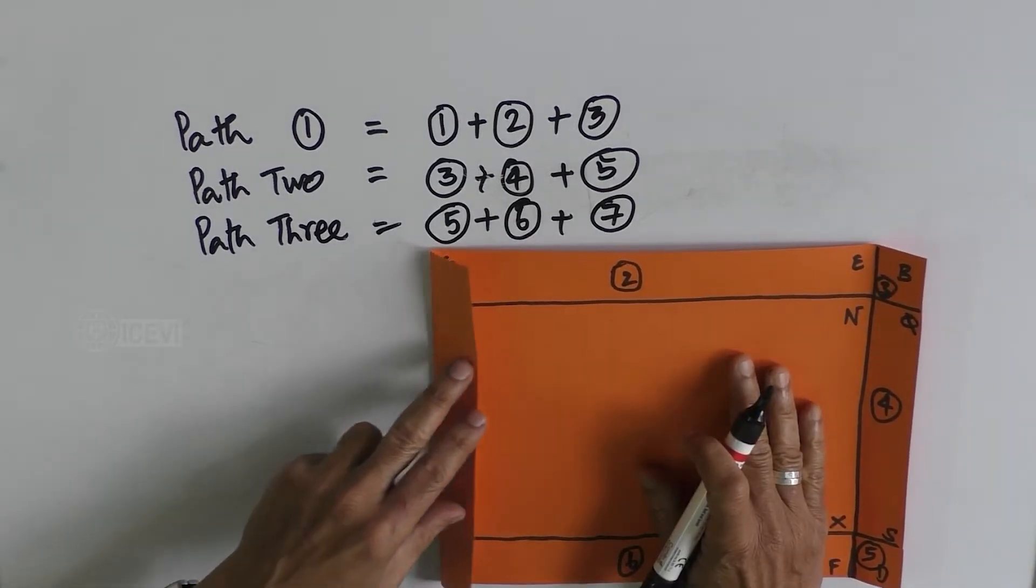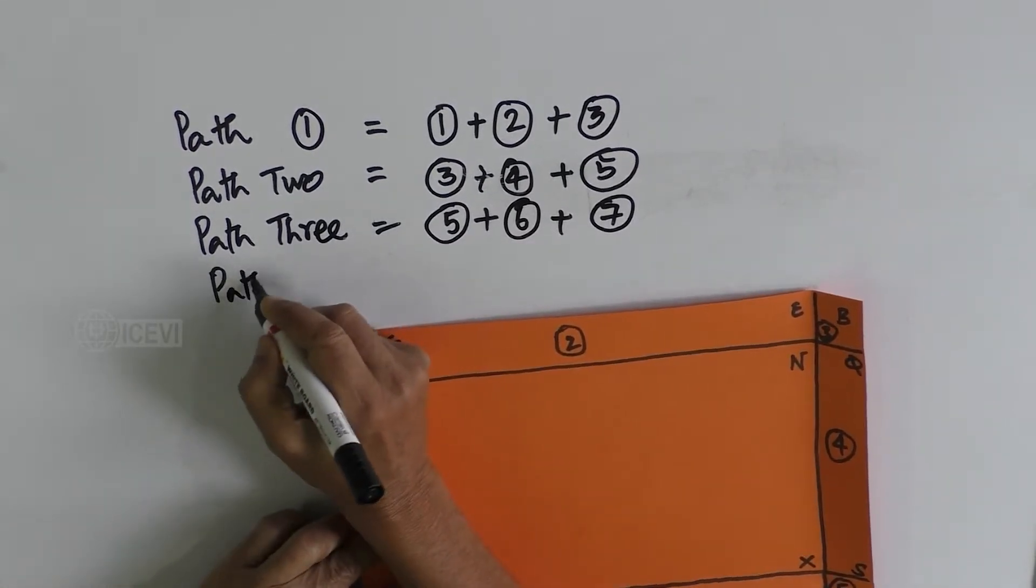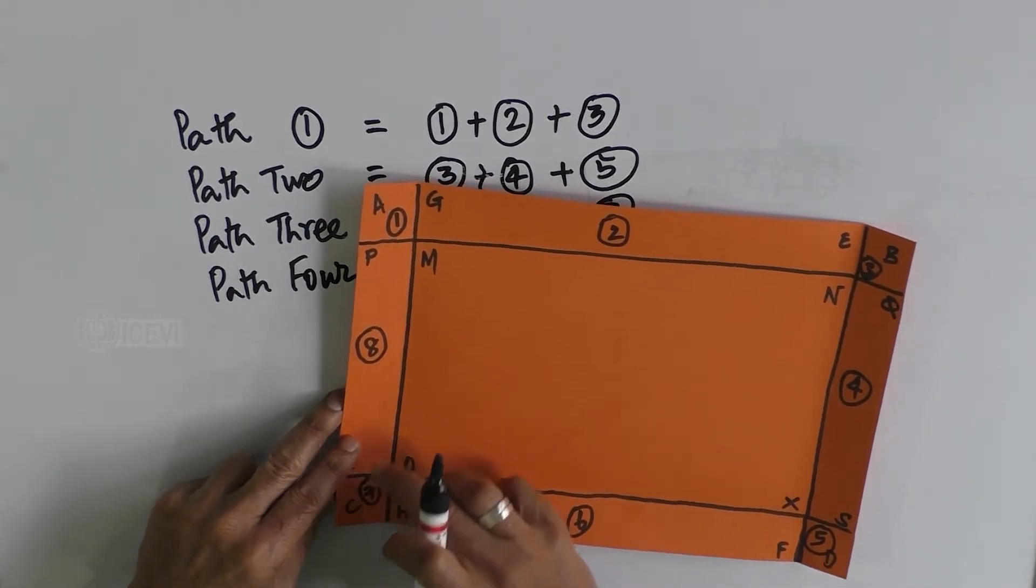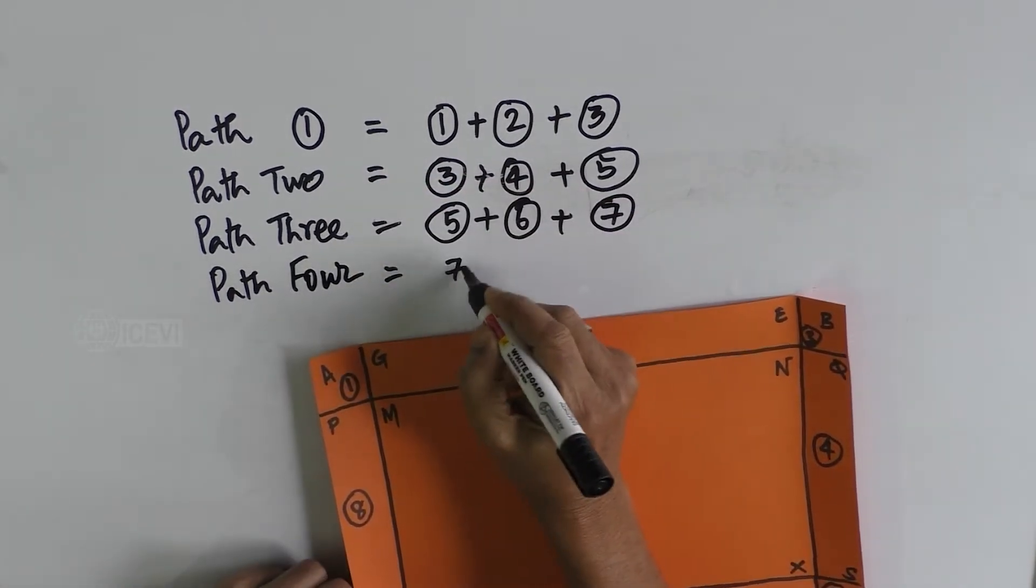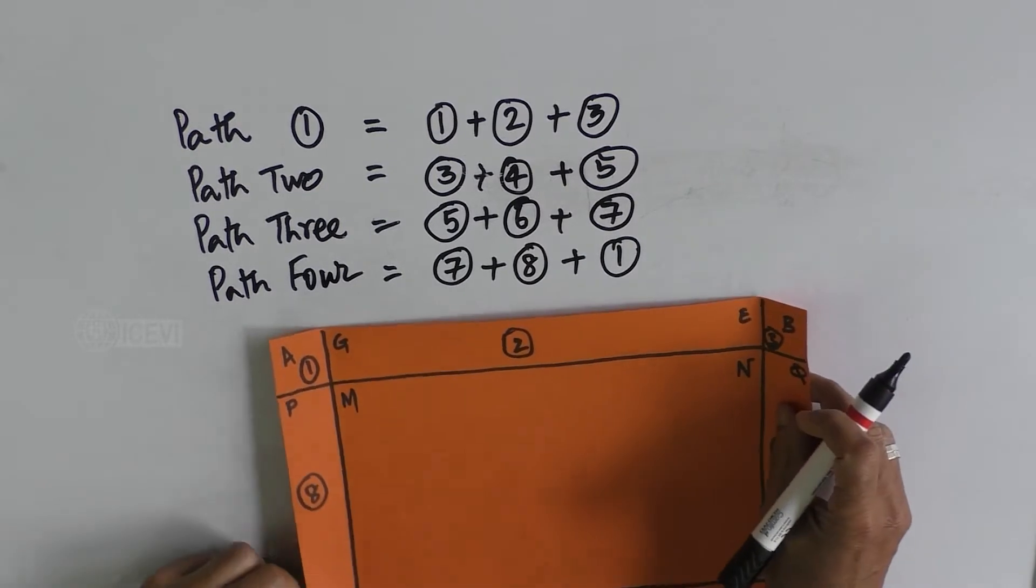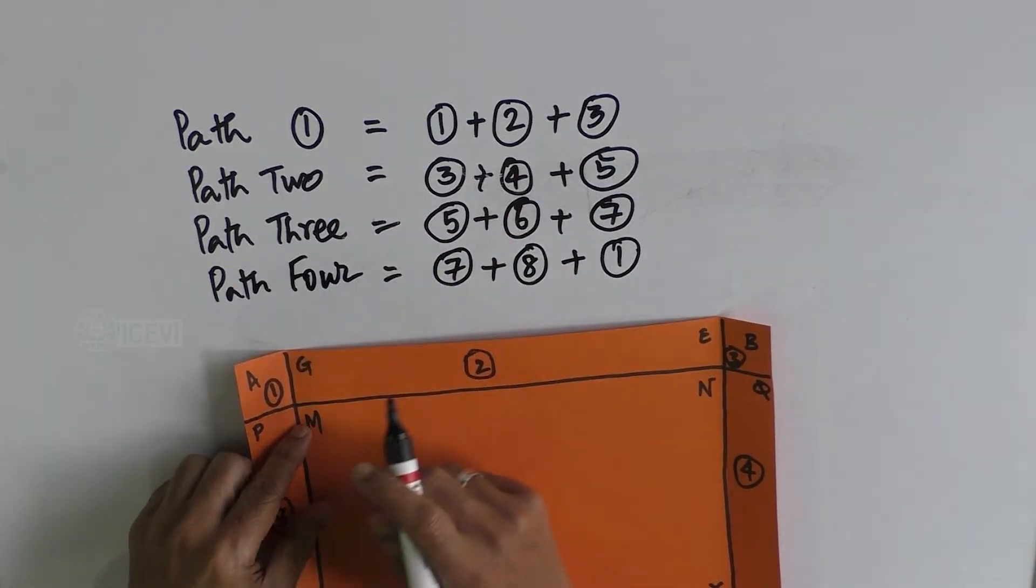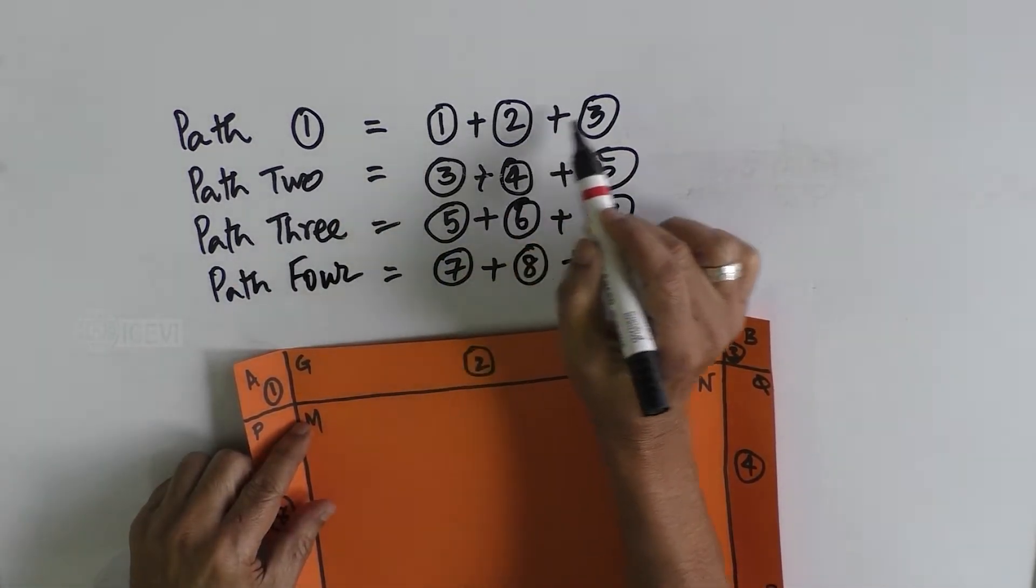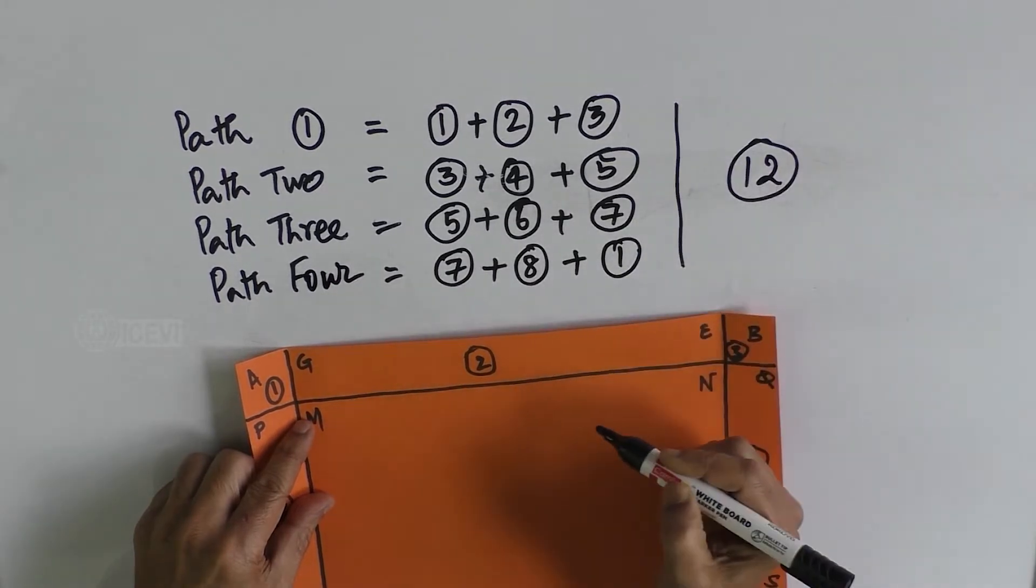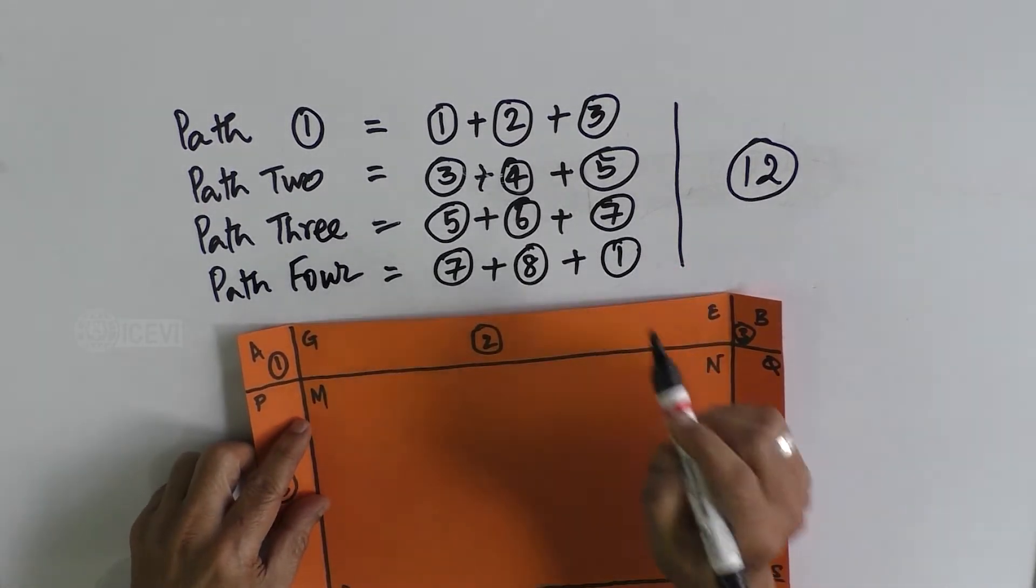Now when you take the path on the left side independently, that is path four, we get the areas of box seven plus eight plus one. So now how many are there when you take the path separately? There are three in each path. That means there are twelve.